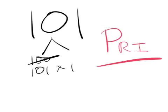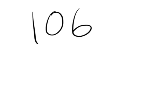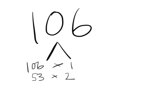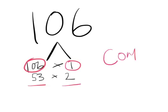One more — is 106 prime or composite? A hint: if a number is even, it's always going to be composite, because 2 will always go into an even number. Pause and work it out. Okay, we're back. The factors of 106 include 106 times 1, and also 53 times 2. There may be more, but as long as I've got more than just 106 and 1 — I do, I've got 53 times 2 — that means it's a composite number.